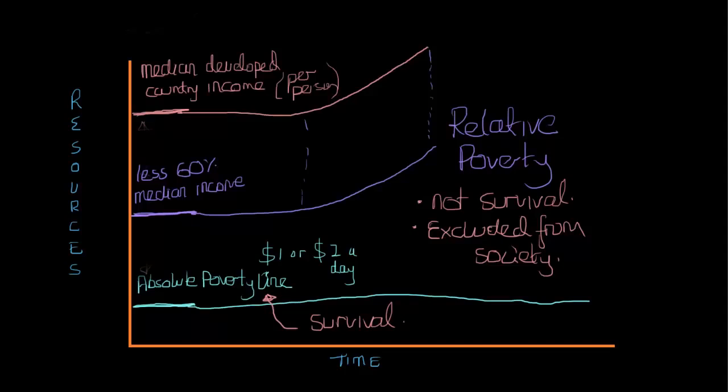Absolute poverty focuses on survival, the basic necessities of life, whereas relative poverty really talks about being excluded from society. And relative poverty can track with a country's per person income going up and down, whereas absolute poverty tends to stay the same.